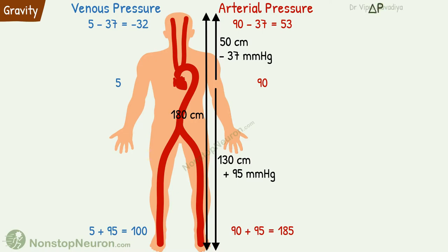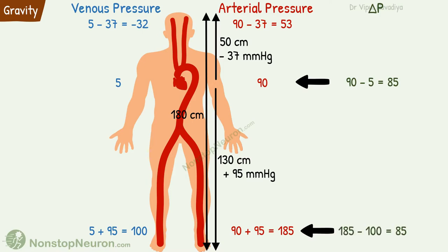Although the absolute pressure at different levels varies, the driving pressure for blood flow is uniform for the entire body. For example, at the level of the heart, arterial pressure is 90 mmHg and venous pressure is 5 mmHg, so driving pressure across the vascular bed is 90 − 5 = 85 mmHg. At the foot, it is 185 − 100 = 85 mmHg. And for the head, it is 53 − (−32) = 85 mmHg. Thus, driving pressure is uniform throughout the body.